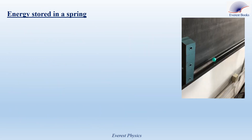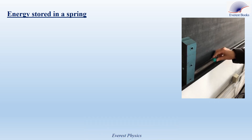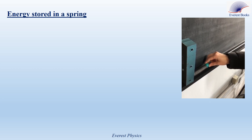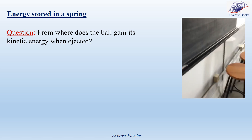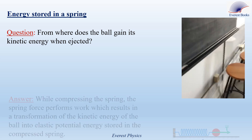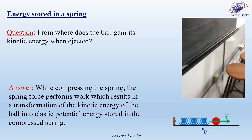Energy stored in a spring. In this short video, a ball is pushed and compresses the spring. When the system is released, the spring ejects the ball with a speed V, so the ball possesses kinetic energy. The ball gains this kinetic energy because while compressing the spring, the restoring force resists the motion of the ball, and its work results in the transformation of kinetic energy into elastic potential energy stored in the spring.